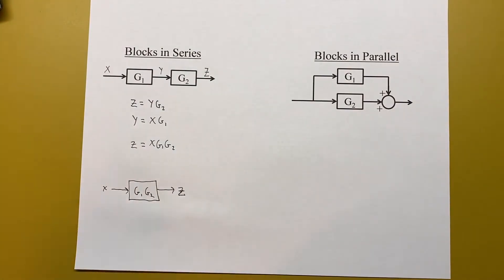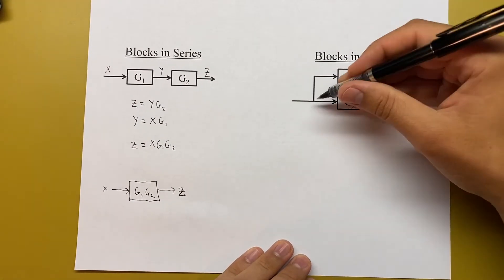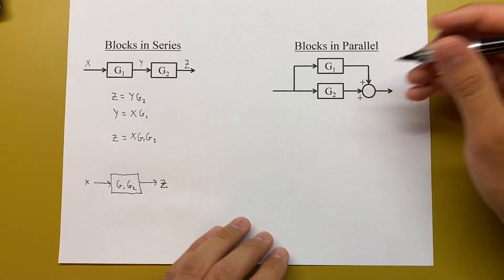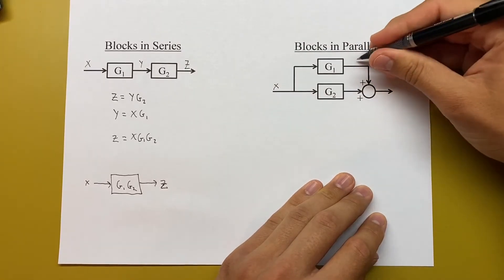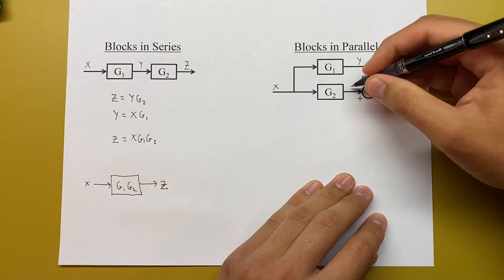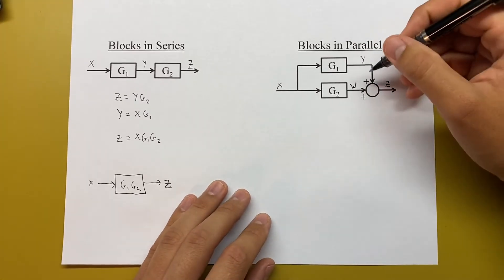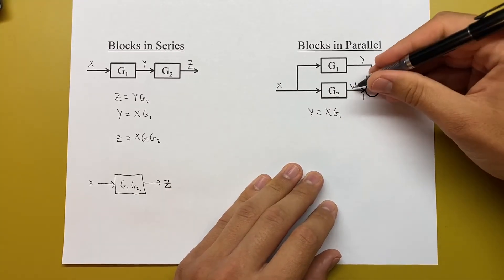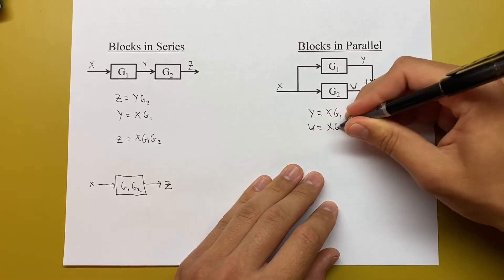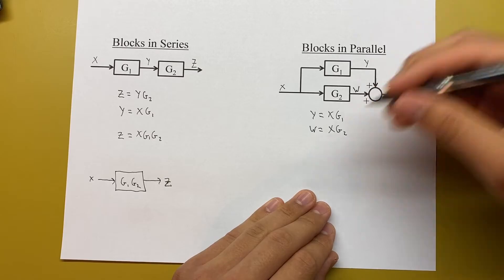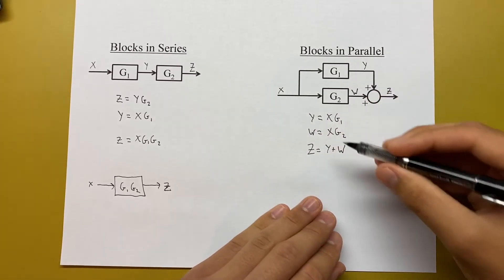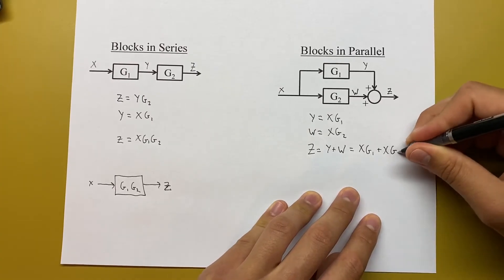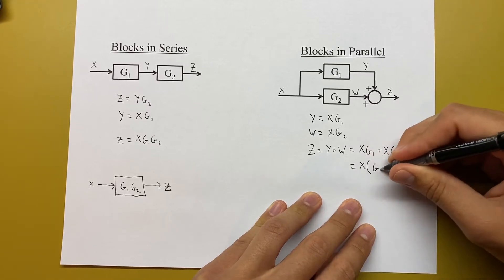Now let's look at blocks in parallel. Here we have G1 and G2 in parallel — a takeoff point on one side feeds into both blocks, and a summing junction on the other side combines them (both positive). Labeling signals x, y, w, and z: y equals x times G1, w equals x times G2, and z equals y plus w, which gives x·G1 plus x·G2.